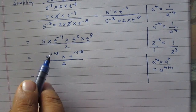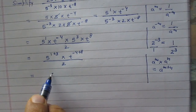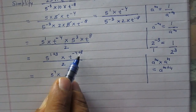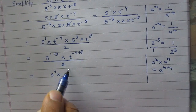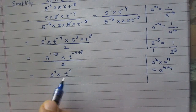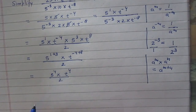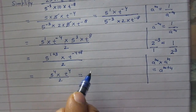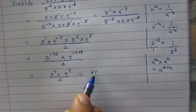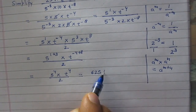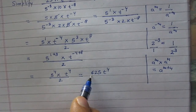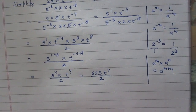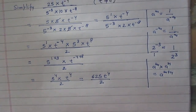t raised to power minus 4 plus 8 becomes t raised to power 4. 5 raised to power 4 is 625. So the final answer is 625 multiplied by t raised to power 4, divided by 2.